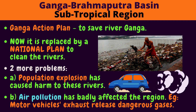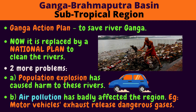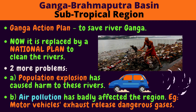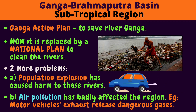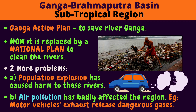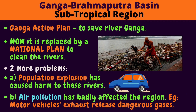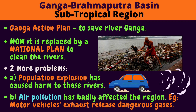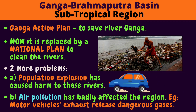But there are two more problems. First, population explosion has caused harm to these rivers — these areas are so densely populated. Second, air pollution has badly affected the region. For example, motor vehicles' exhaust releases dangerous gases. Look at the picture — can you see the car and the exhaust? It's releasing dangerous gases that pollute the air.